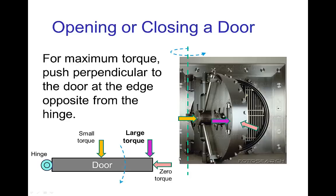Here are some other examples. If we are pushing a heavy door, the way to apply a large torque is to push perpendicular to the door as far away as possible from the hinge. If you instead push in the middle of the door, you have a shorter lever arm and so you don't create as much torque with the same amount of force. And if you push into the side of the door along the length toward the hinge, you don't rotate the door at all.